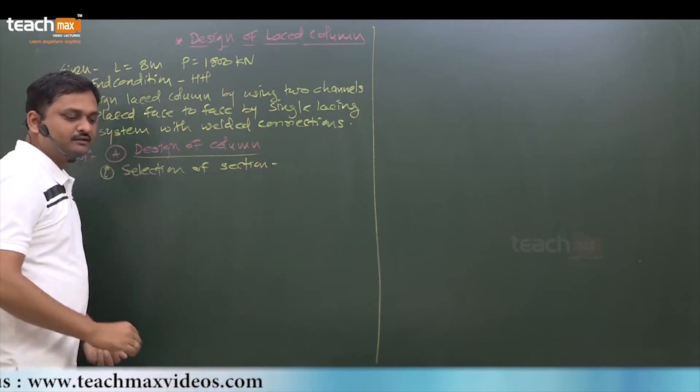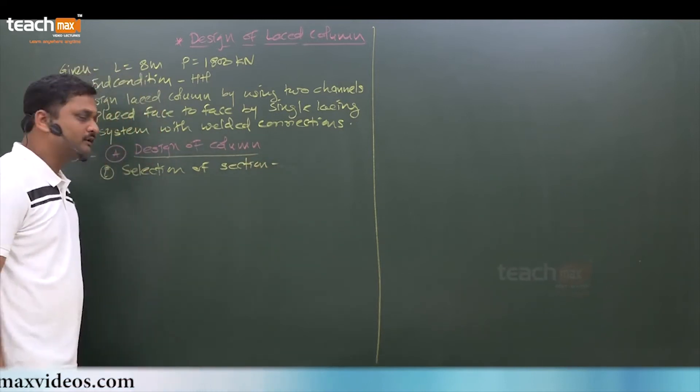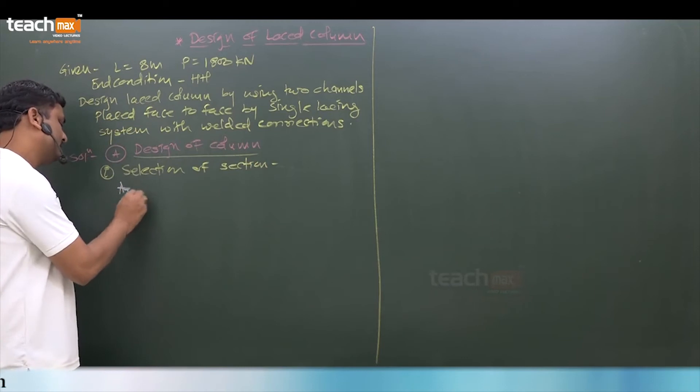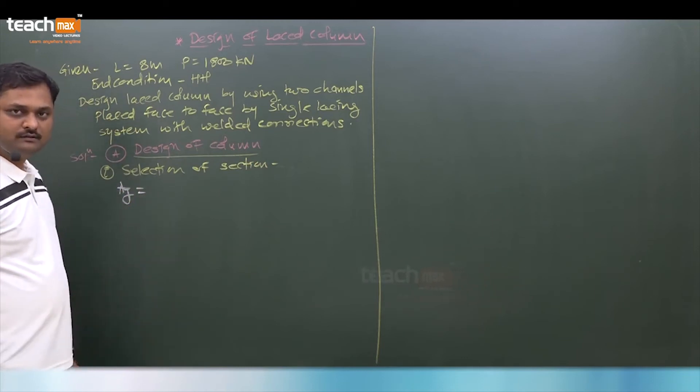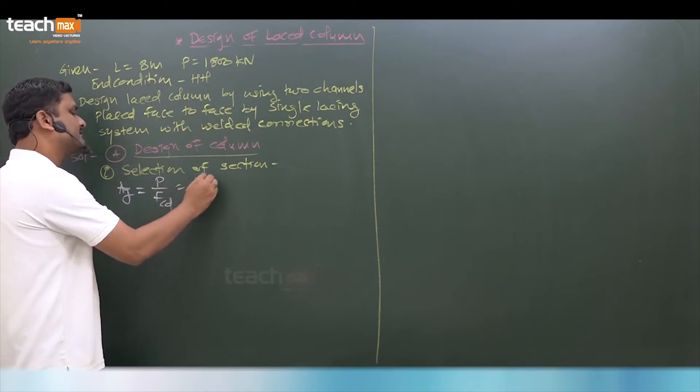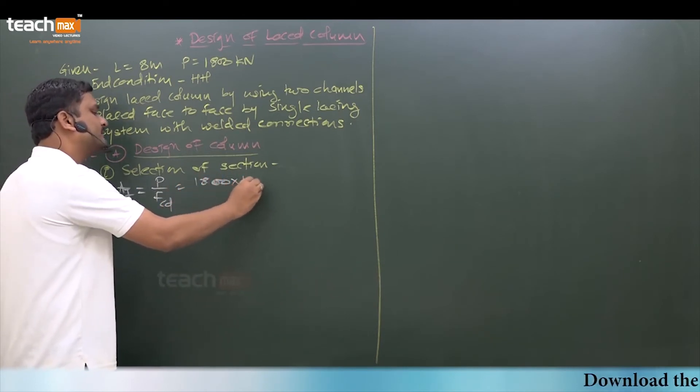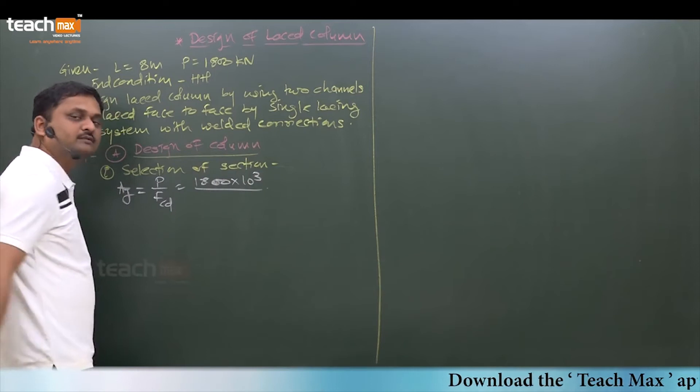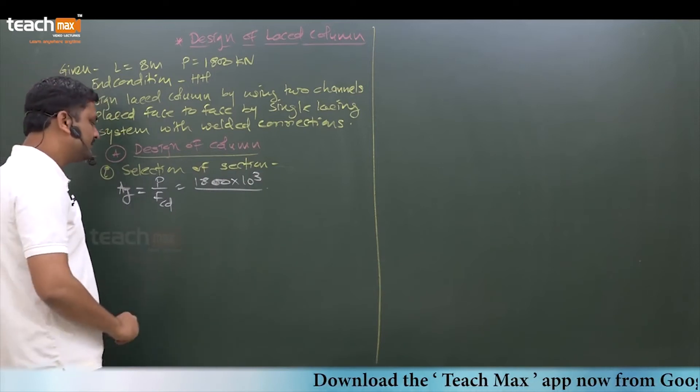selection of section. Here we will use the formula to find out area, so it is P by fcd. So P, factored axial compression given, so no need to multiply by 1.5. So 1800 divided by